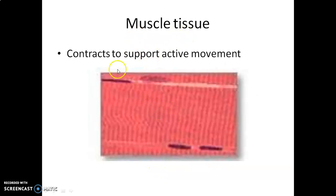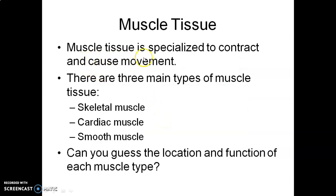The next type is muscle tissue. It contracts and provides movement to our body. Muscle tissue is specialized to contract and cause movement. There are three main types of muscle tissue: skeletal muscles, which are attached to our bones; cardiac muscles, which are attached to our heart; and smooth muscles, which are smooth in texture.